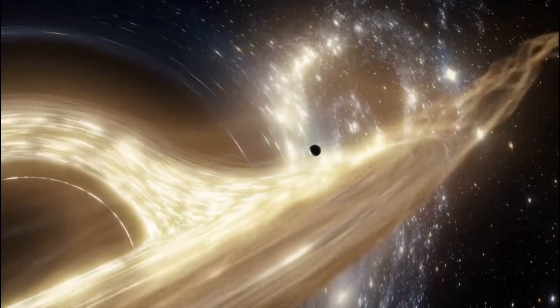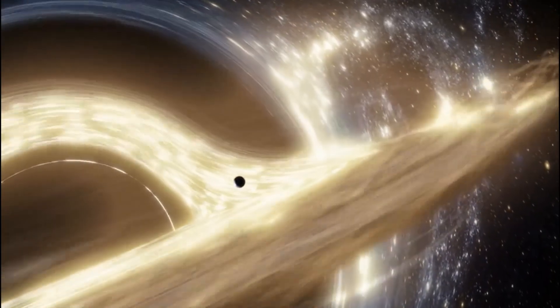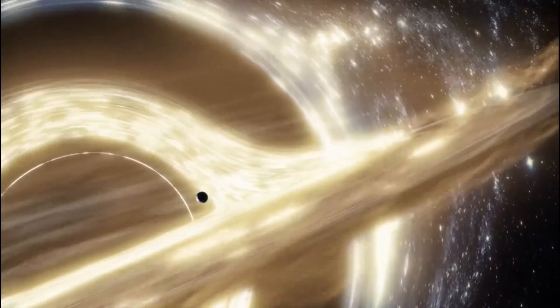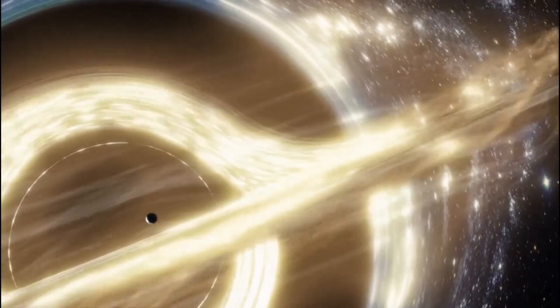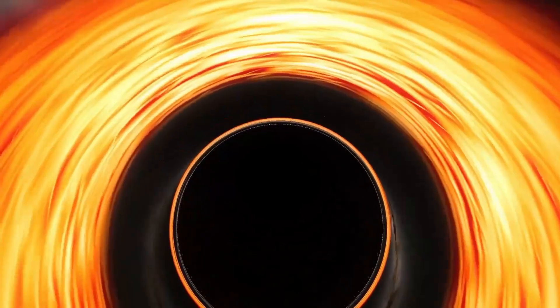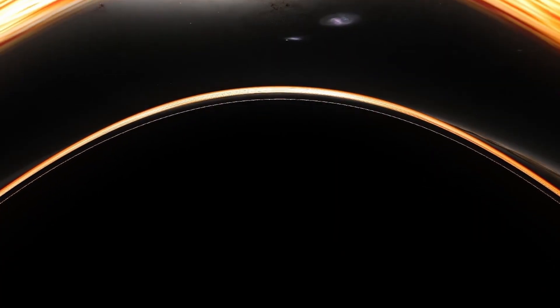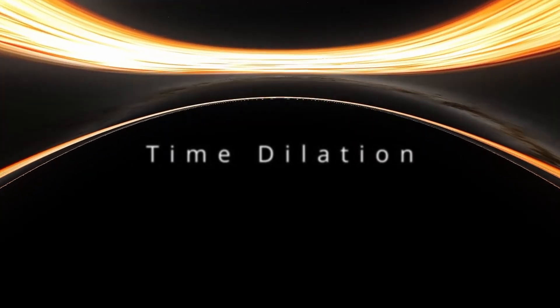This creates what we call a gravitational well so deep that nothing, not even light, can escape once it gets too close. That's why we call it a black hole. The boundary around this region is called the event horizon, and it's like a one-way door to nowhere. But here's the really mind-bending part. If you could somehow survive falling into a black hole, time would behave very strangely. As you got closer to the singularity, time would slow down from the perspective of someone watching you from far away. To them, you'd appear to freeze at the event horizon. But from your perspective, you'd continue falling toward the singularity in what would feel like normal time. Scientists call this effect time dilation, and it's one of the many ways singularities break our normal understanding of reality.